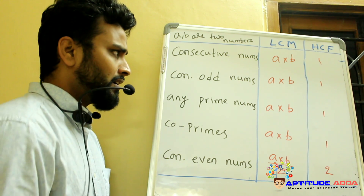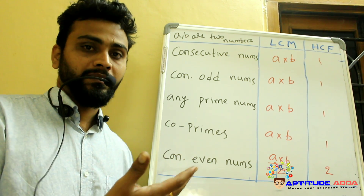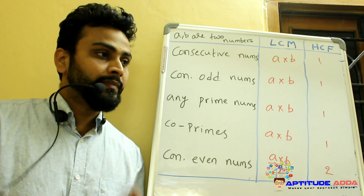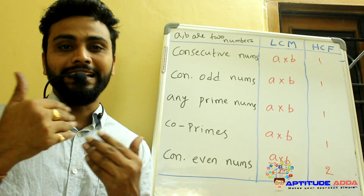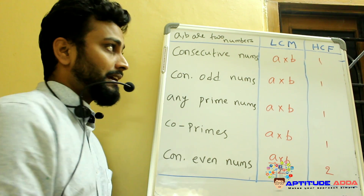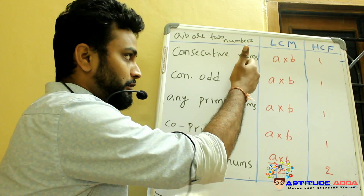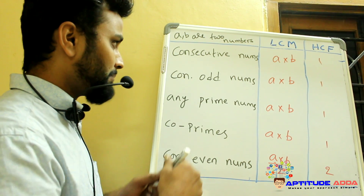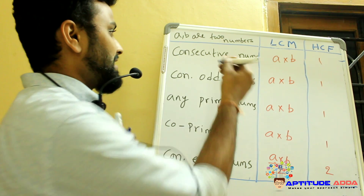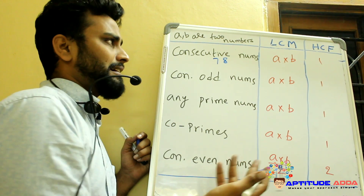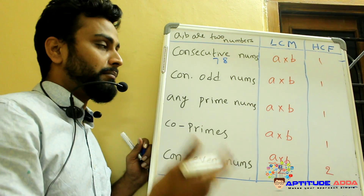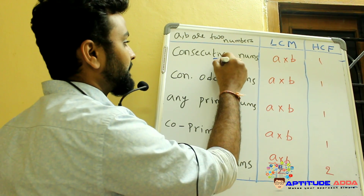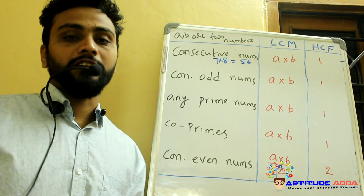How to find it out? We have five types of numbers. They may be consecutive numbers — side-by-side numbers like 2, 3 or 24, 25 or 198, 199. If A and B are two consecutive numbers, their LCM is the product of the two numbers. For example, say the two numbers are 7 and 8 — simply multiply the two, you will get LCM. 7 into 8 gives 56, which is LCM of the two numbers.